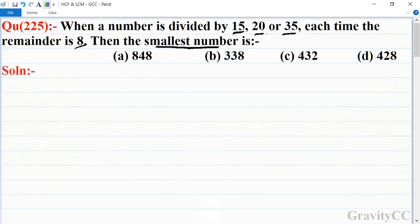First, we find the LCM of 15, 20, and 35. We take the table of 5: 5×3 is 15, 5×4 is 20, and 5×7 is 35.